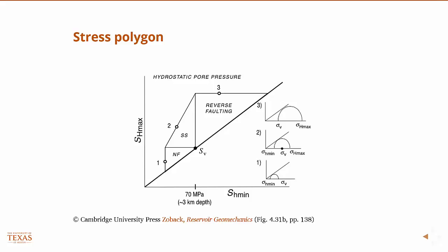You can say that the state of stress in the Earth, the value of SH min, SH max, and SV, is always going to be in this polygon.